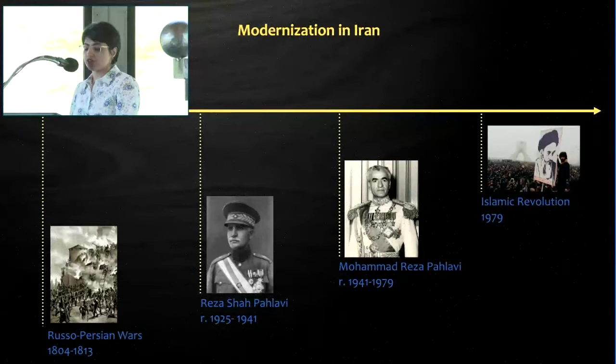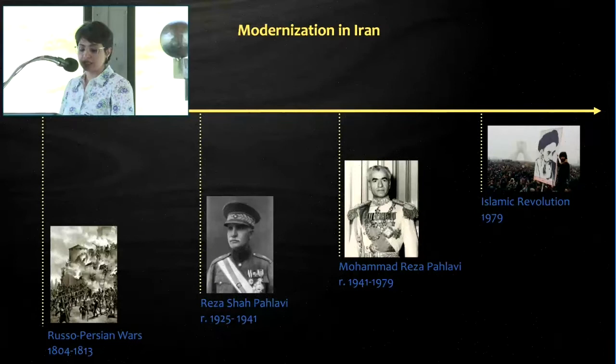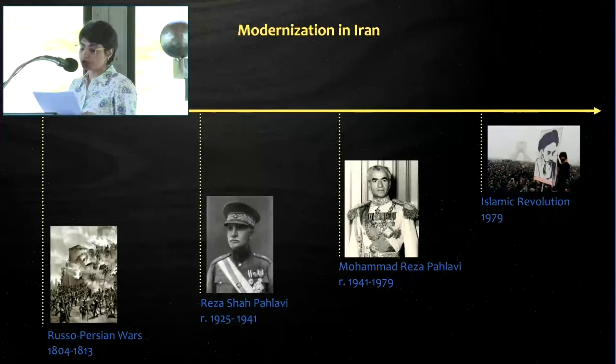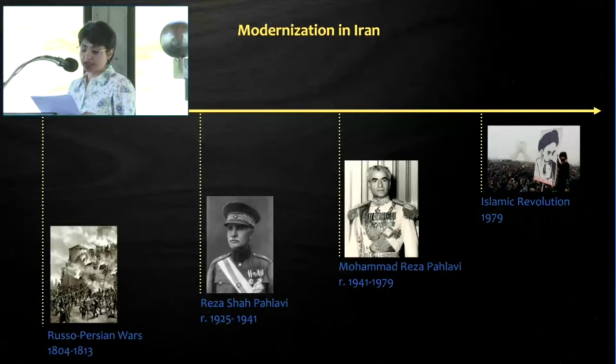These turbulent decades spurred a series of social and cultural transformations that resulted in the emergence of modern Iran. The most significant drive of modernization was initiated by the Pahlavi dynasty, especially Reza Shah Pahlavi. Reza Shah desired to adopt aspects of Western civilization so that Iran would become equal to the West. He introduced many social, economic, and political reforms during his reign, which caused many changes in Iranian buildings and cities.